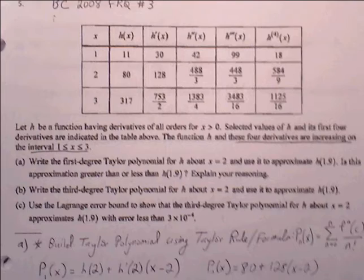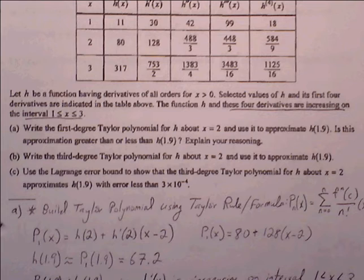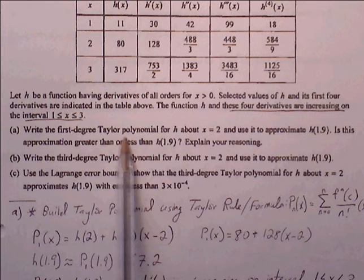Part A: write the first degree Taylor polynomial for h about x equals 2 and use it to approximate h of 1.9. Is this approximation greater than or less than h of 1.9? The first degree Taylor polynomial is essentially the tangent line equation.